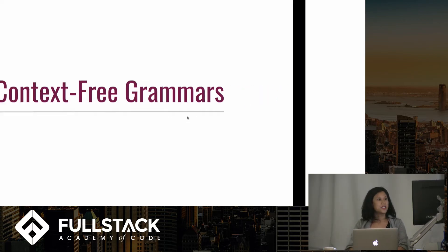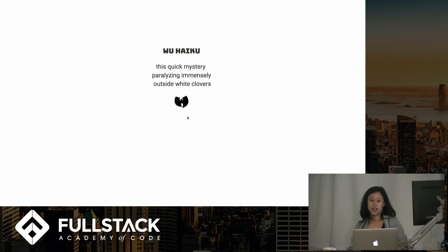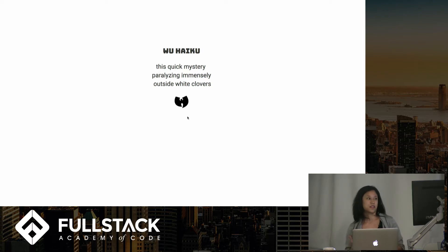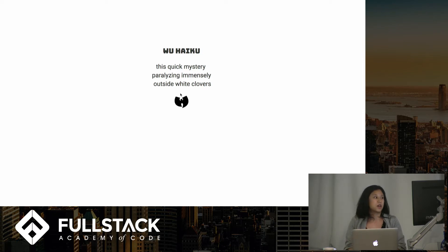Here's a haiku generator I made using Wu-Tang lyrics. It says: 'this quick mystery paralyzing immensely outside white clovers.' If you don't know, a haiku is a three-line poem where the first line is five syllables, the second is seven syllables, and the last one is five syllables. I wrote the production rules using a context-free grammar, but the output is random each time.